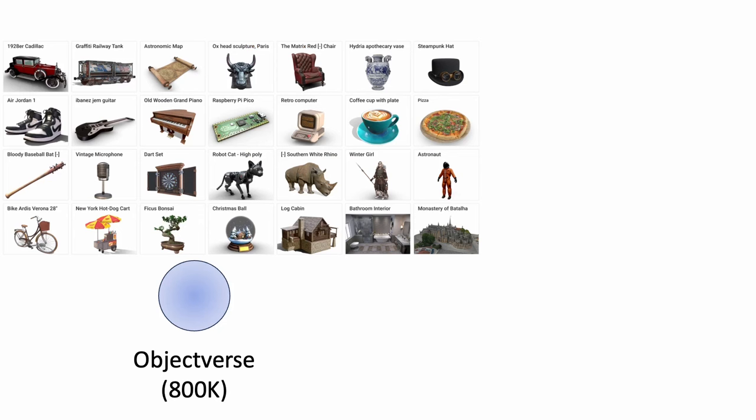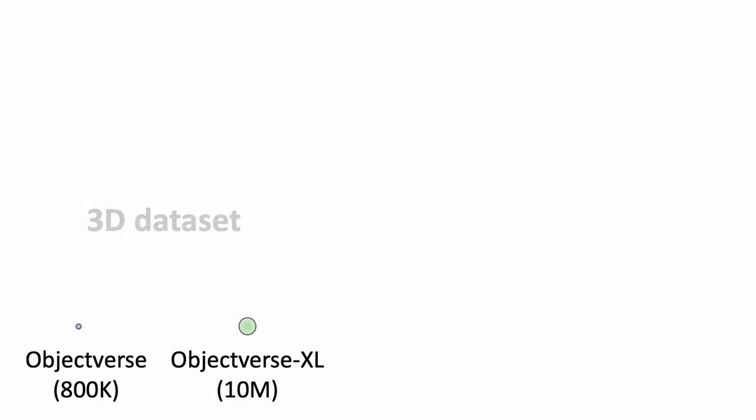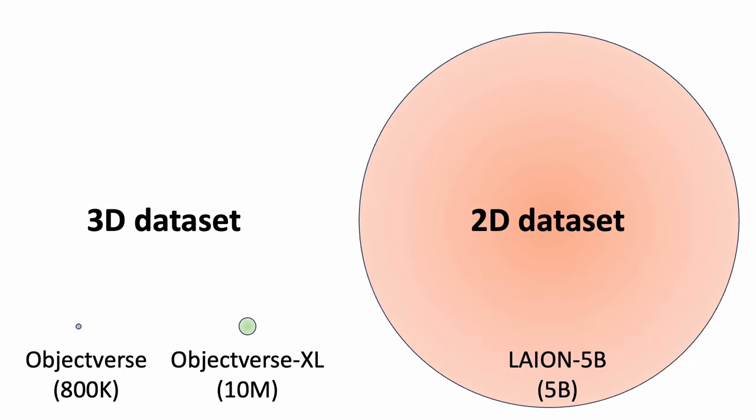Using 3D data to tackle the 3D generation problem is a logical step. In recent years, the community has collected large-scale datasets of 3D assets with diverse appearance and shapes, but they are much smaller compared to the available 2D image datasets. Let's start with leveraging the 2D datasets using diffusion models.